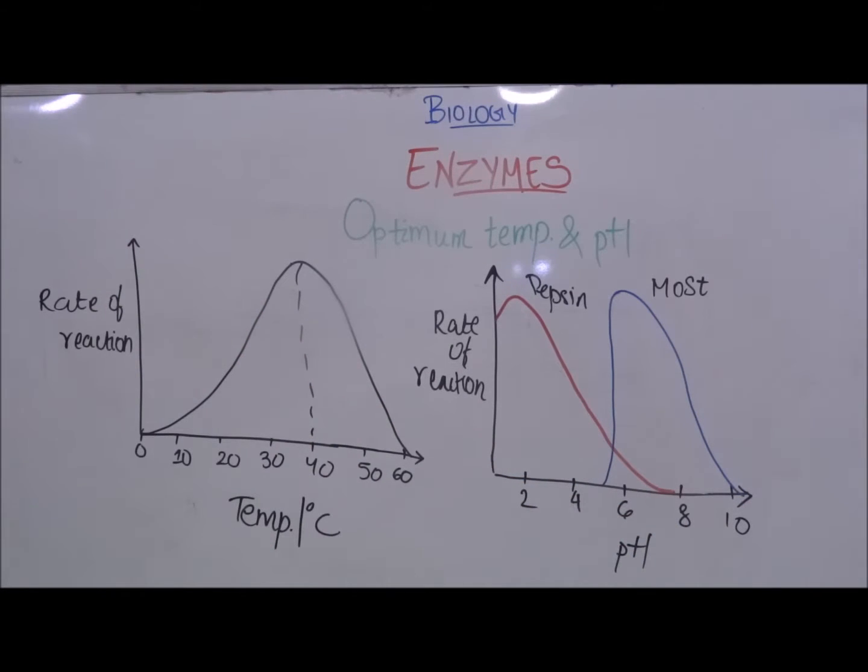So the optimum or the best temperature is when the rate of reaction is the highest. So the optimum temperature for this enzyme is 40 degrees Celsius because the rate of reaction is highest at 40 degrees Celsius.